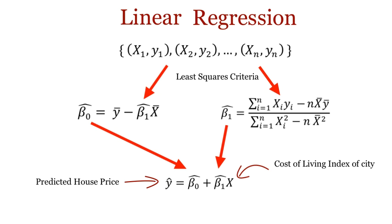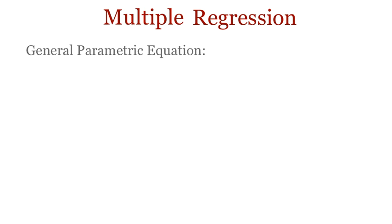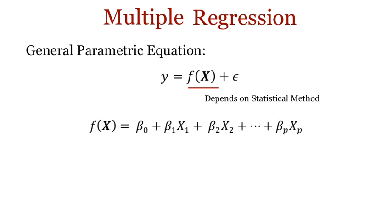But most real-world problems have many covariates. In such a case, we would want to use the extension of linear regression called multiple regression. This is another parametric regression method, and since it's parametric, it also has a general form y equals f of x plus epsilon. But this time, f of x takes the form of the sum of products of p covariates and coefficients. That is beta0 plus beta1 x1 plus beta2 x2 all the way up to beta p xp.